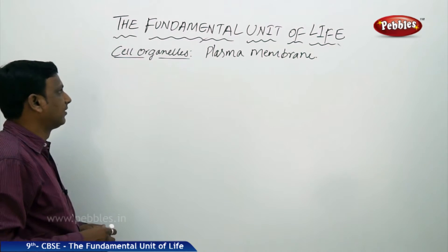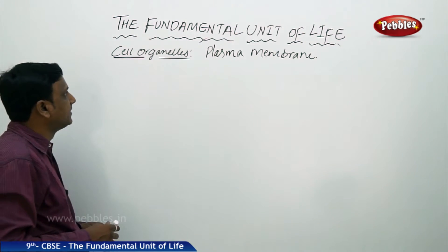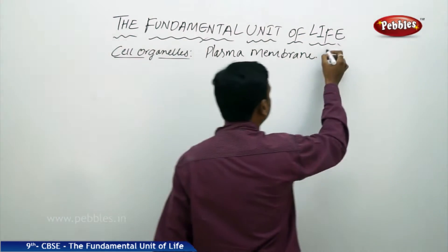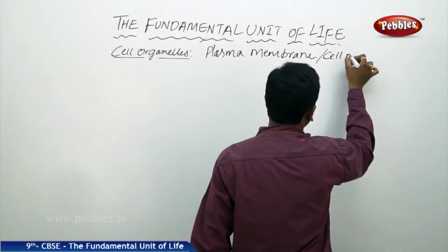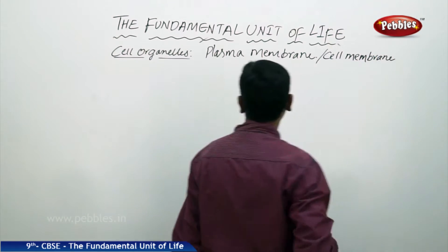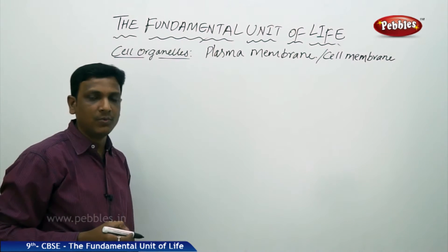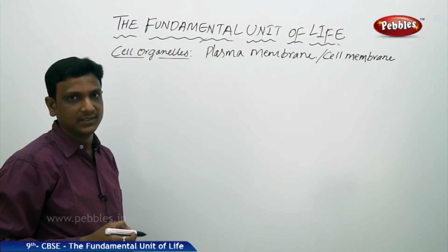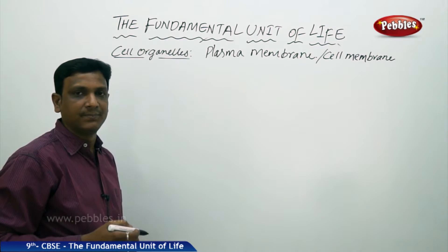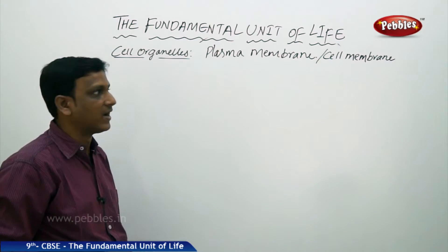Let us talk about the cell organelles. The first and most important cell organelle is the plasma membrane, also called the cell membrane. The plasma membrane or cell membrane is the outermost covering of a cell. It is the outermost covering which separates the cell and its constituents from the external environment.